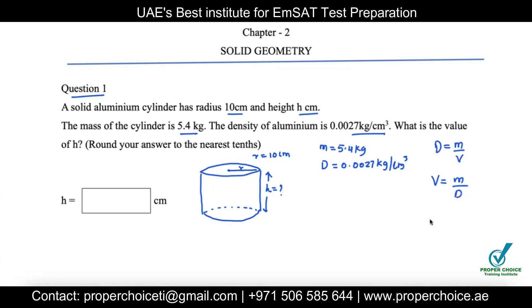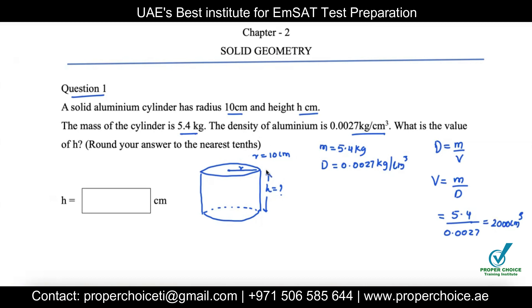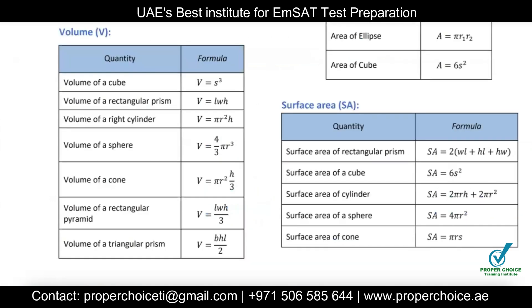Substituting the values: volume equals 5.4 divided by 0.0027, which gives approximately 2000 cubic centimeters. Now that we have V = 2000 cm³, we can use it to find the height. The formula for the volume of a right cylinder — which will be provided to you in the exam — is V = πr²h.